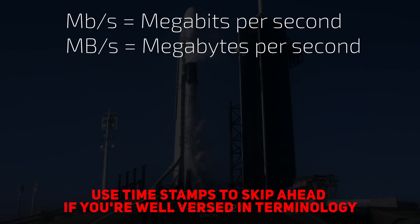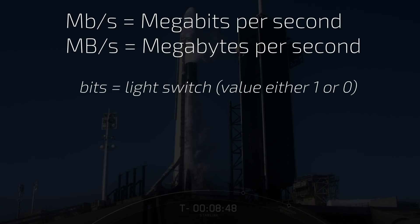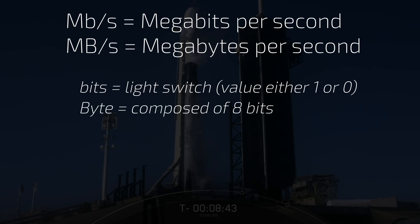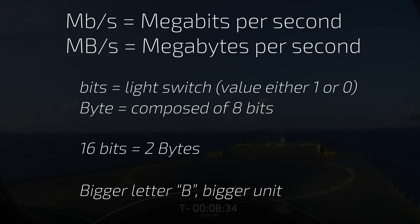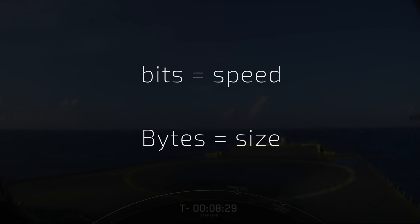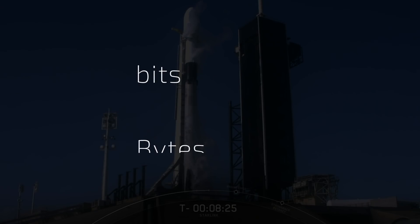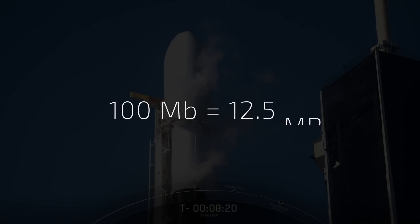Megabits per second and megabytes per second. Think of a bit like a light switch, with a value of either 1 or 0 — it is the smallest form of computer data. A byte, with a capital B, is composed of 8 bits. 16 bits would equal 2 bytes. Capital B for bytes, lowercase b for bits. Generally speaking, bits are used to refer to interface speeds while bytes are used to refer to data storage or file size.